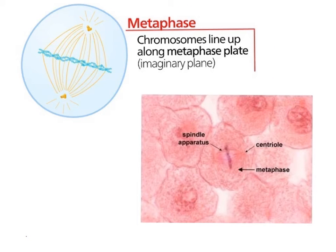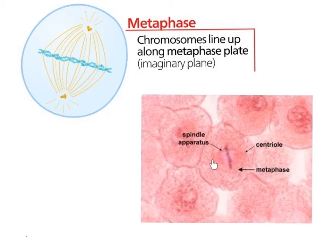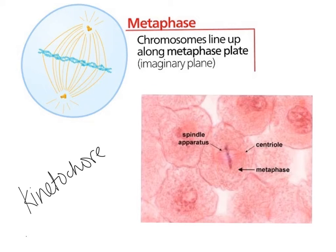Metaphase is when the chromosomes line up in the middle of the cell — yay for the letter M for metaphase, middle. They line up along the metaphase plate, which is kind of like the equator — an imaginary line that doesn't really exist in the cell, but it's the halfway point between the two centrioles. The spindle fibers connect to the chromosomes at what's called the kinetochore, which is a region on each chromatid where the spindle fibers can connect.